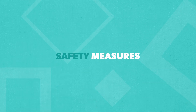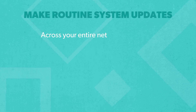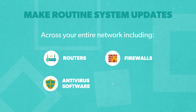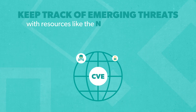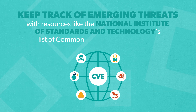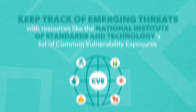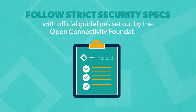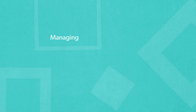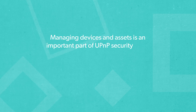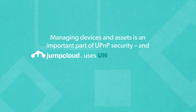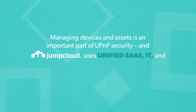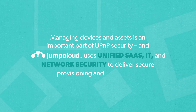So how can you protect yourself from UPnP security risks? Make routine system updates across your entire network, including routers, firewalls, antivirus software, and devices. Keep track of emerging threats with resources like the National Institute of Standards and Technology's list of common vulnerability exposures. Follow strict security specs with official guidelines set out by the Open Connectivity Foundation. Managing devices and assets is an important part of UPnP security, and JumpCloud uses unified SaaS IT and network security to deliver secure provisioning and monitoring.